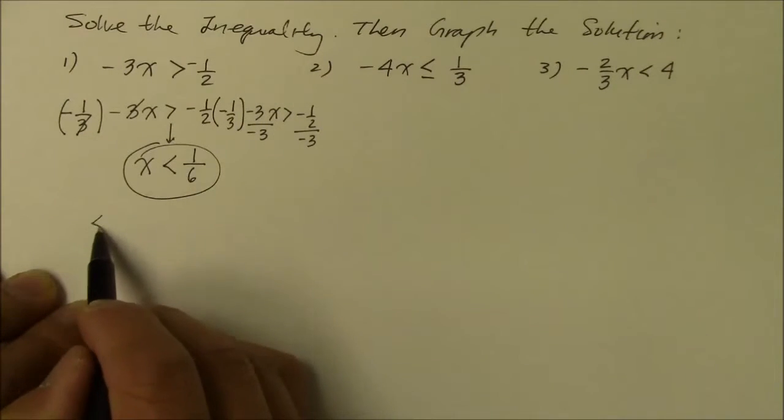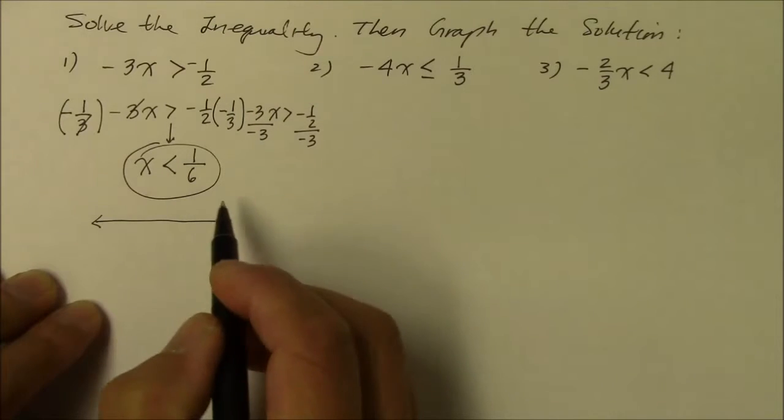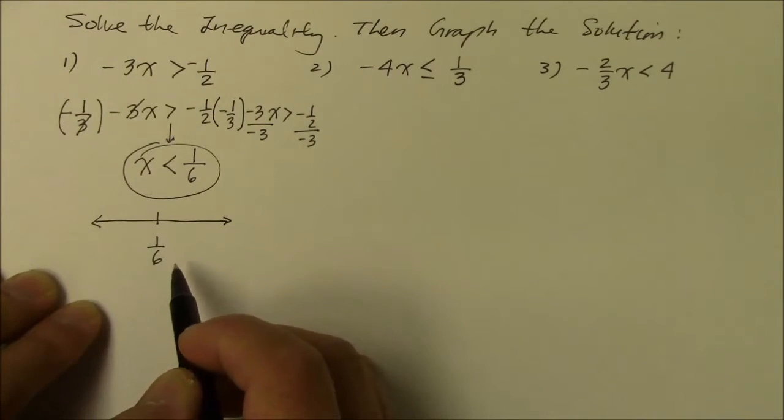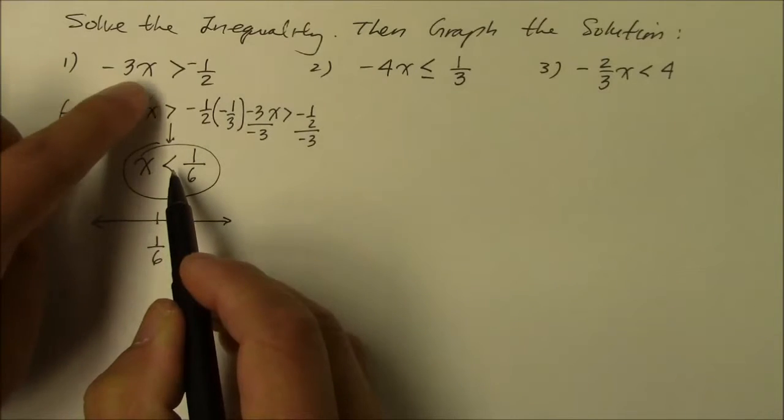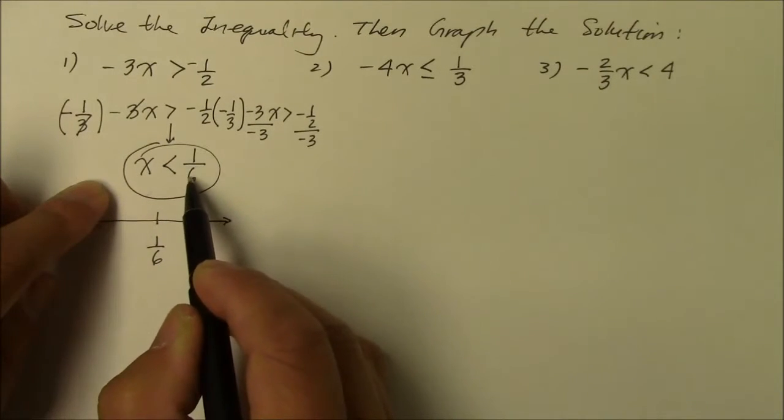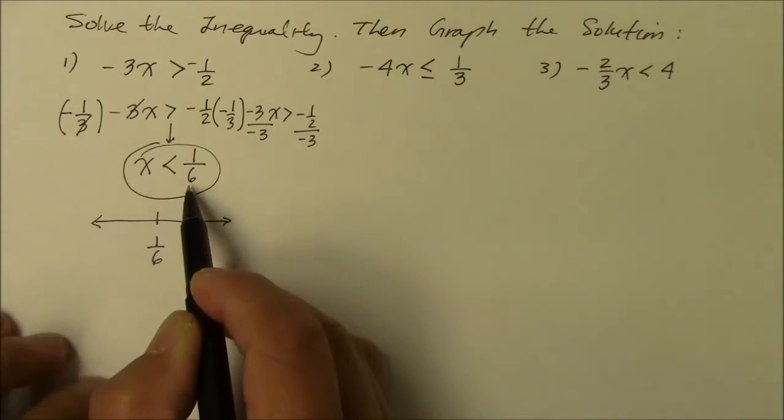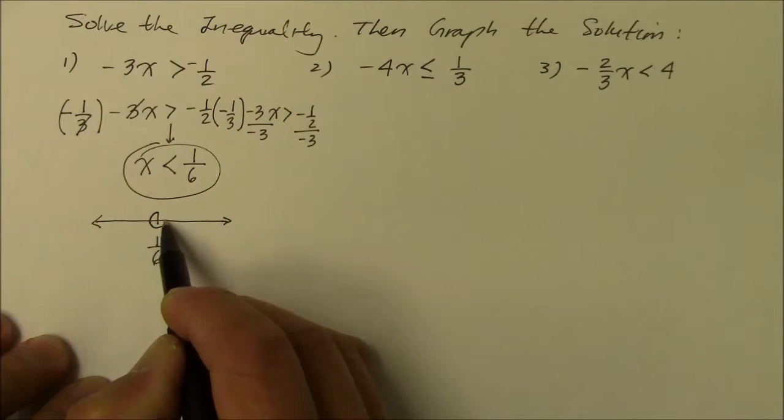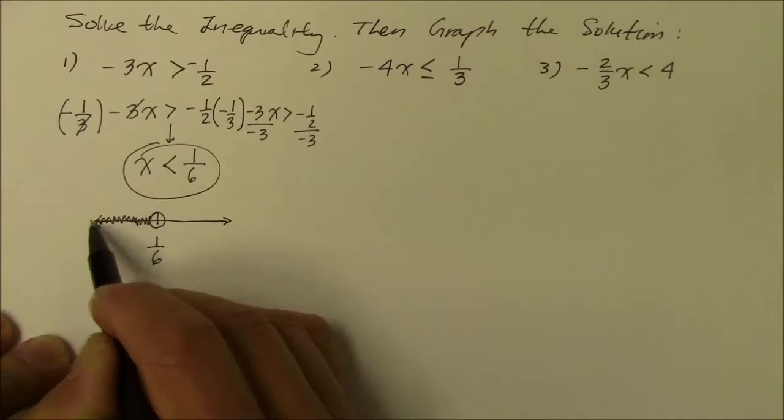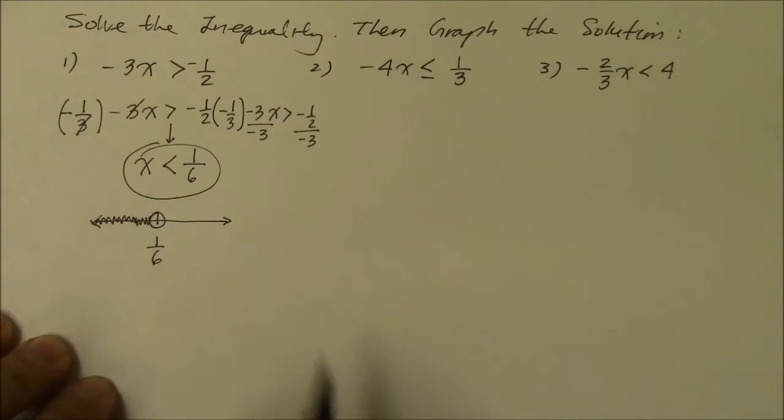Now, how do you graph this number line? The number we're talking about is 1 over 6. And the numbers you choose to satisfy this inequality better be less than 1 over 6. Not equal to, less than. So, open circle. Because it's less than, because it does not include that 1 over 6. And less than means any number to the left of that on the number line. There it is.